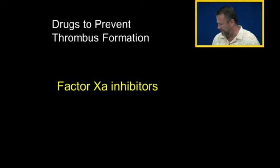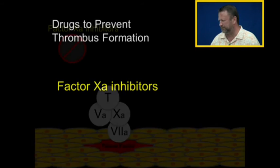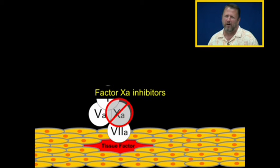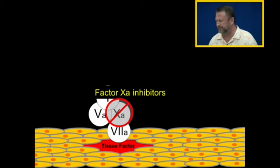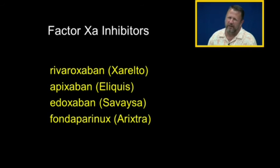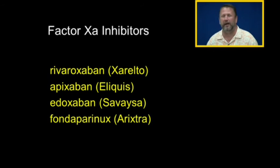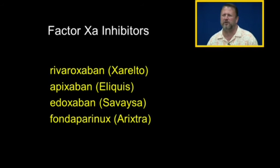Let's talk about the factor 10a inhibitors. Factor 10a inhibitors interfere with factor 10a so it can't bind to 5a and it can't activate thrombin. Some of the factor 10a inhibitors you might see in use: rivaroxaban (Xarelto), apixaban (Eliquis), edoxaban (Savaysa), and fondaparinux (Arixtra).